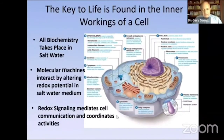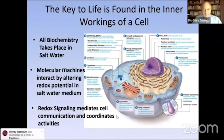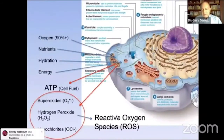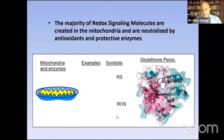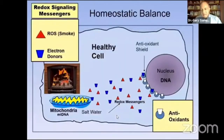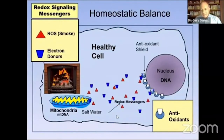The cell communicates and coordinates all of these very diverse activities inside by using oxidation of oxygen or saltwater, which also includes things like hypochlorites. Most of these are produced while the metabolism is producing sugar and creating superoxides. These are being created by the mitochondria and then eliminated by the antioxidants. Inside the cell, there's a continual process of creation and elimination of these redox signaling molecules.